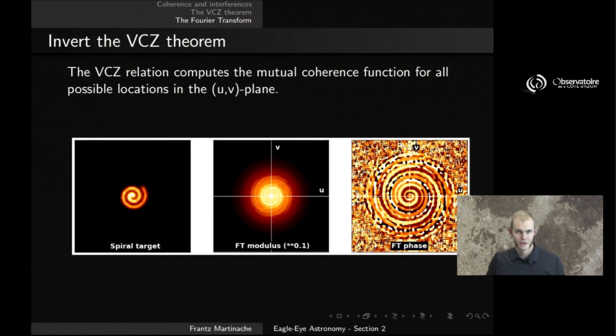That Van Cittert-Zernike relation allows you to compute the mutual coherence function for the entire UV plane, all of the possible locations in the space of UV coordinates. Let's look at this example here of a spiral-looking target. And trust me, there are objects that actually look like this up in the sky. And we are simply using the Zernike theorem to compute the modulus, as well as the phase associated to these objects, as a function of the U and the V coordinates. You get these maps, the Fourier transform modulus, here taken to the power of 0.1, so that the fainter structures are actually visible, and the phase part of the Fourier transform here.